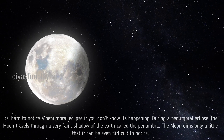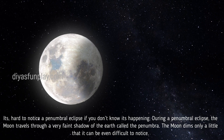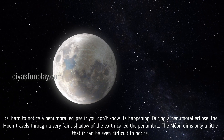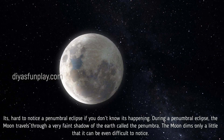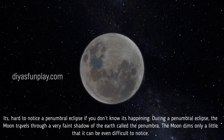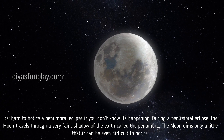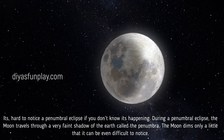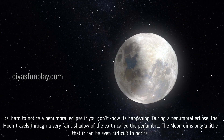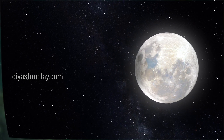It's hard to notice a penumbral eclipse if you don't know it's happening. During a penumbral eclipse, the moon travels through a very faint shadow of the Earth called the Penumbra. The moon dims only a little, so it can be even difficult to notice.